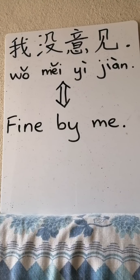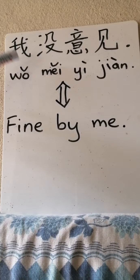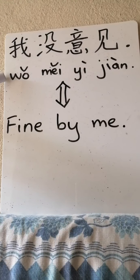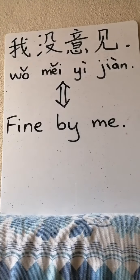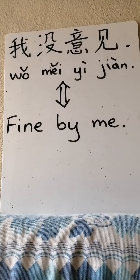All right, so this is how we say it in Chinese. I will say it in three levels of speed. The first will be how we normally use it. Second will be extremely, extremely slow. And third will be the medium speed. So: fast, slow, medium.